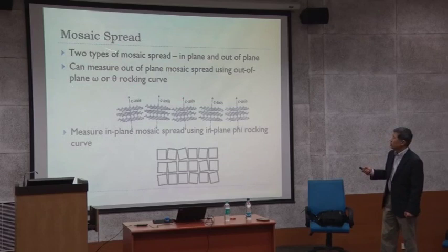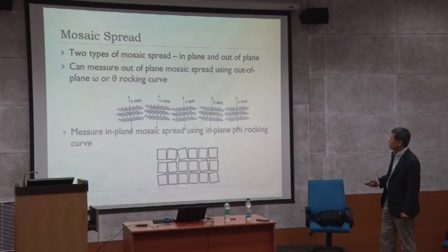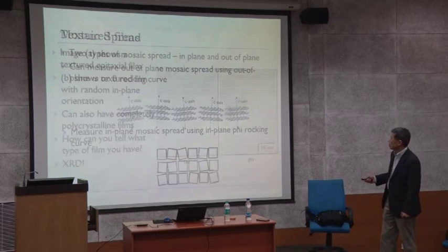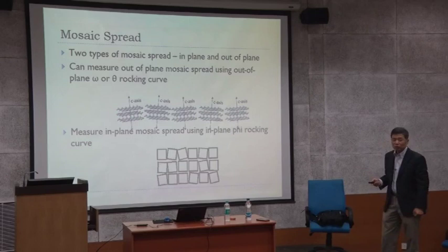So you have to determine whether your film is oriented this way, or that way, or a perfect single crystal, or completely random. Depending on your degree of crystalline quality, your measurement of your films will be different. So first you have to really know what you're measuring. Your mosaic spread is the out-of-plane mosaic spread and the in-plane mosaic spread.